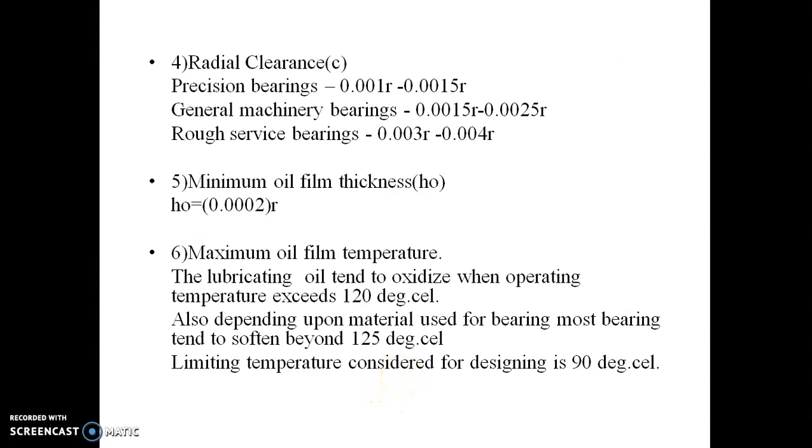The next one is radial clearance denoted by c. The effect of radial clearance is that if it is small it provides necessary velocity gradient but for this purpose we must have the surface finish of the contacting surface very well and it requires fine finishing operation which is costly. So it will increase the initial cost and the running cost of bearing. The commonly used values of radial clearance of the bearing are given here: precision bearing 0.001r to 0.0015r, general machinery bearing 0.0015r to 0.0025r, and rough service bearings 0.003r to 0.004r.